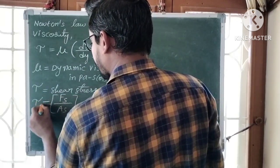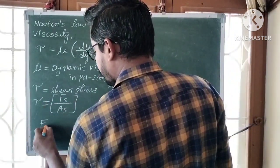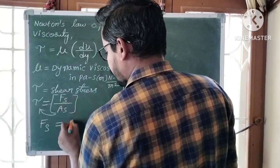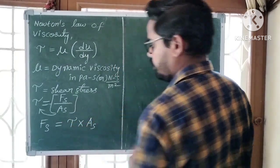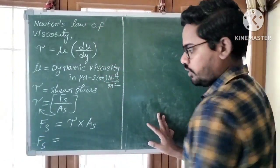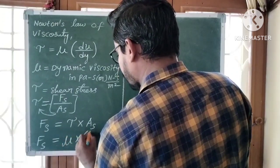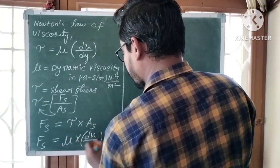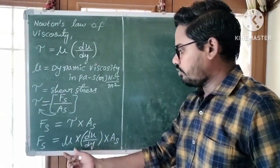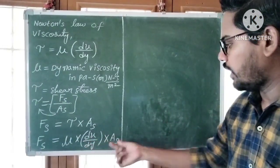Shear stress τ = shear force / area under shear. Therefore, shear force Fs = τ × As. Substituting Newton's law: Fs = μ × (du/dy) × As. To find Fs, we need values of μ, du, dy, and As.